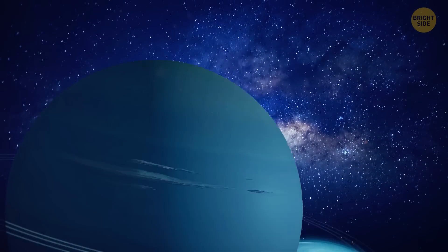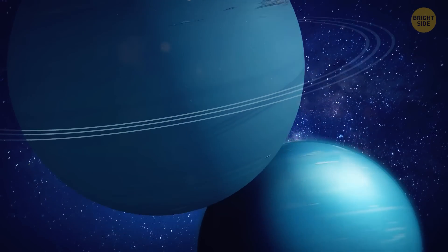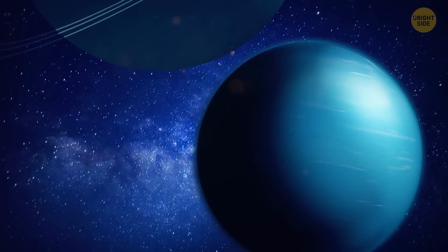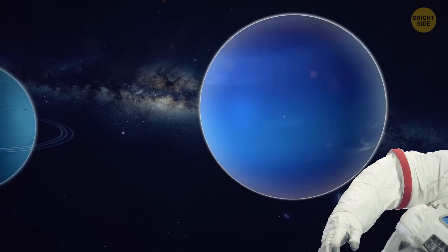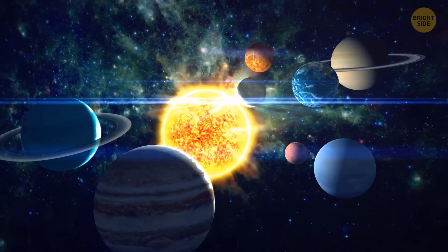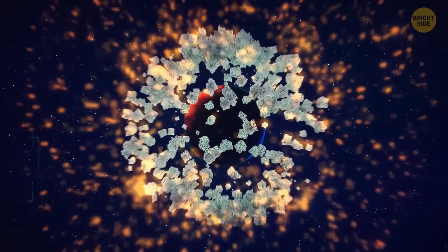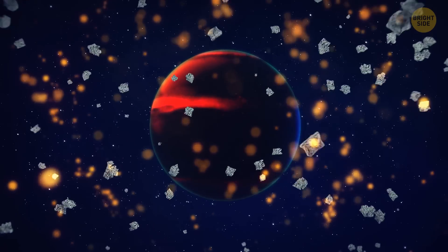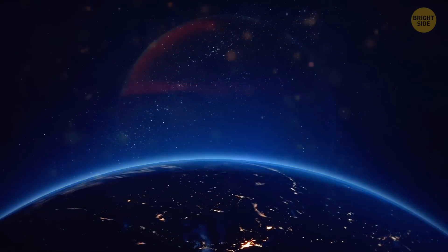Around 4 billion years ago, Uranus apparently switched places with Neptune. It's hard to imagine planets that big doing that, but this theory might solve the mystery of how our solar system came to be. We know that rocky planets formed after big collisions.